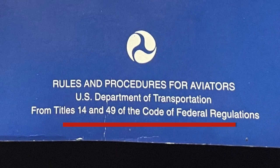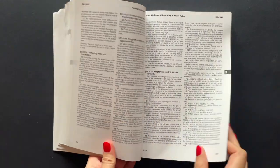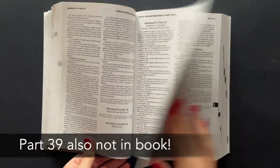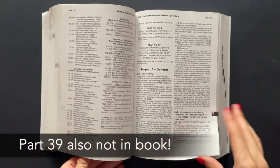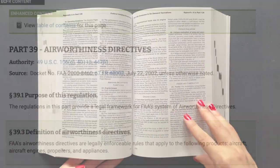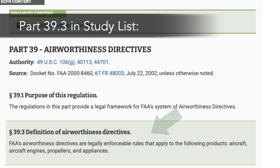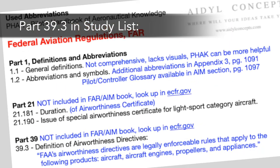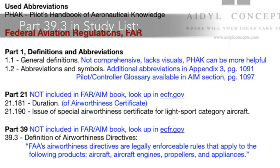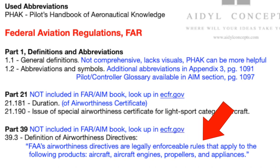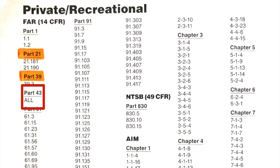The same goes for part 39 — I just couldn't find it anywhere in this book. Specifically, part 39.3 is labeled 'Definition of Airworthiness Directive,' so I inserted the FAA's definition right from the eCFR entry.